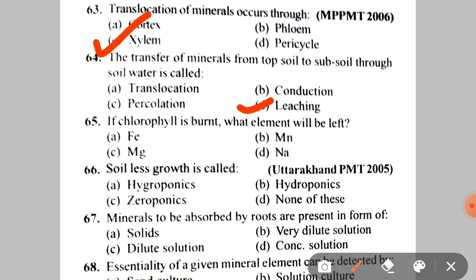Next: if chlorophyll is burnt, what element will be left? A. Fe, B. Mn, C. Mg, D. DNA. The correct answer is C — Mg (Magnesium), because magnesium is the major constituent/central element of chlorophyll.